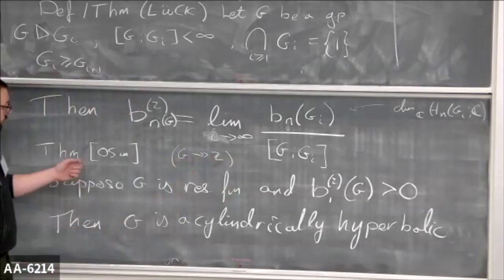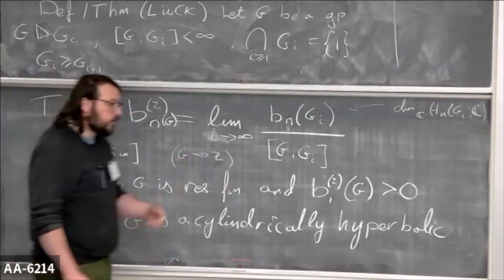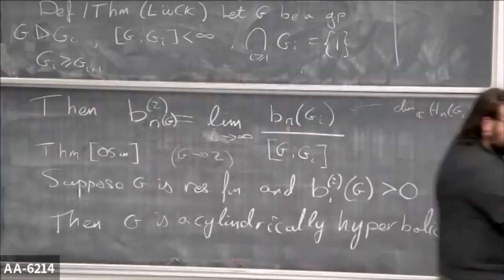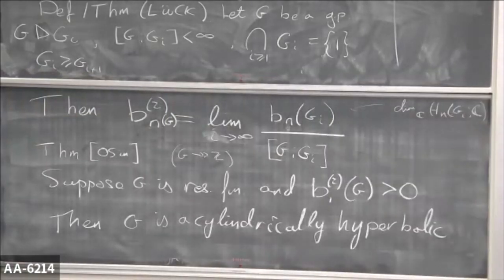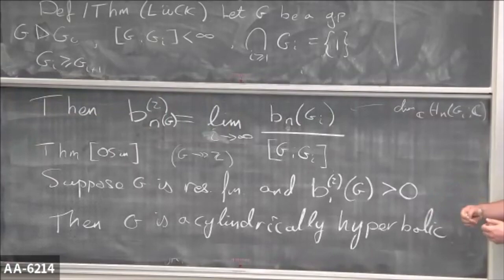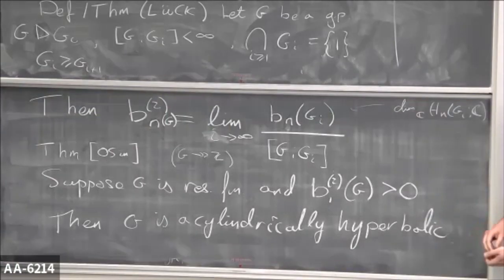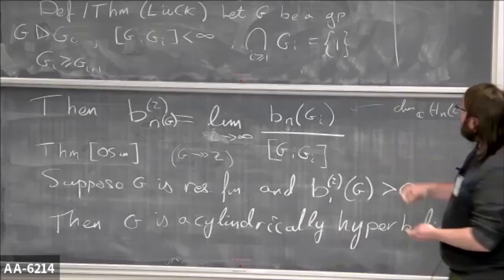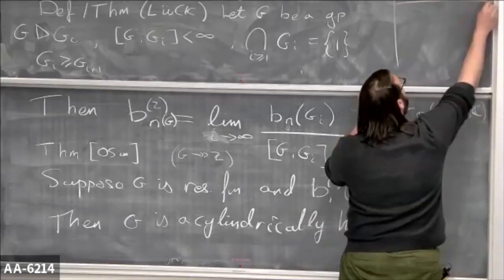This is a theorem of Osin, and this is how Osin proves a slightly amazing fact that Carolyn mentioned about groups of deficiency two. So if you have a presentation with two more generators than relations, you can prove that...